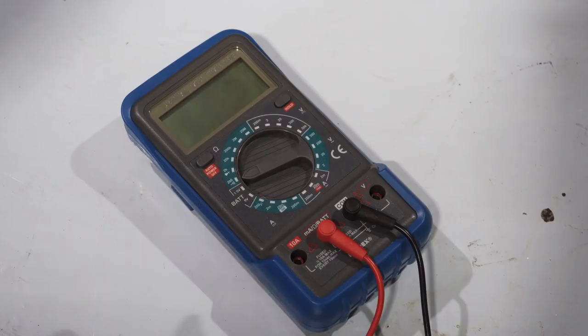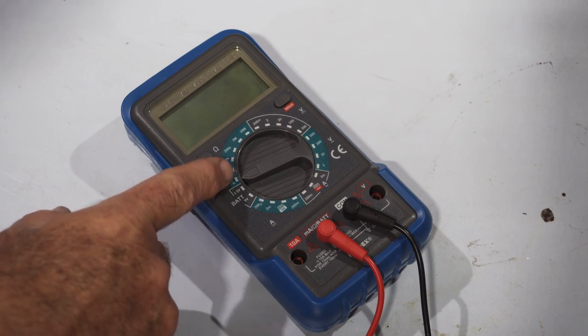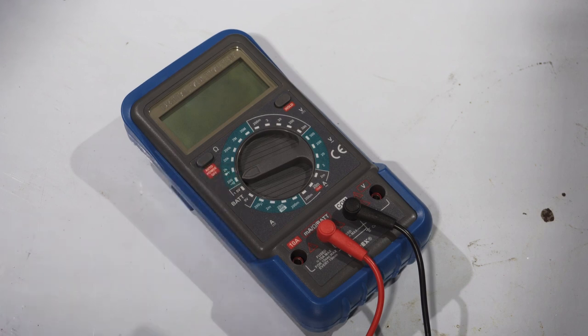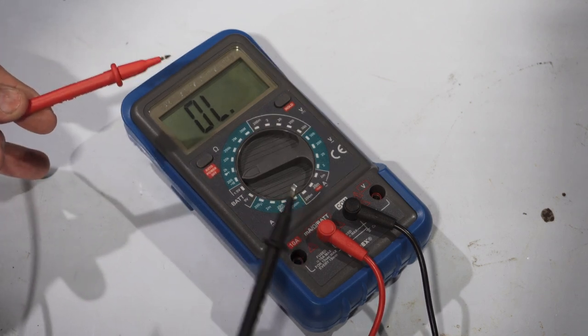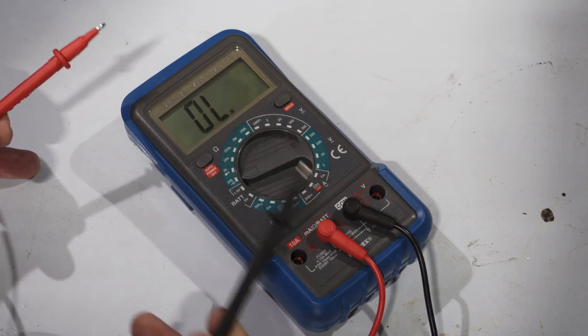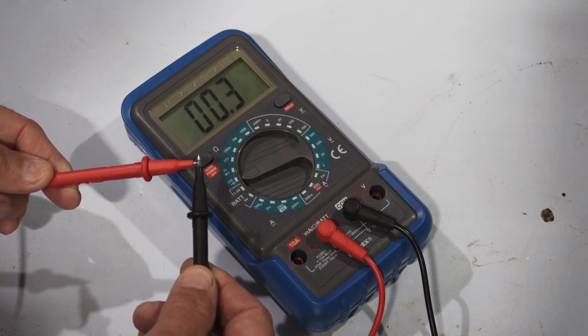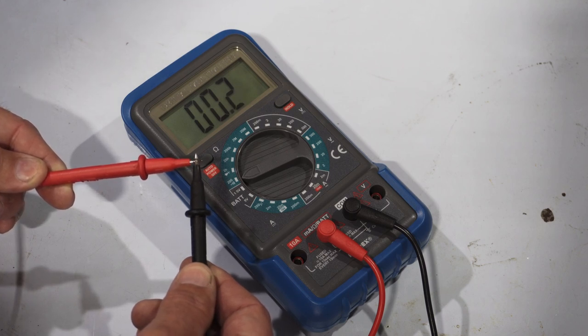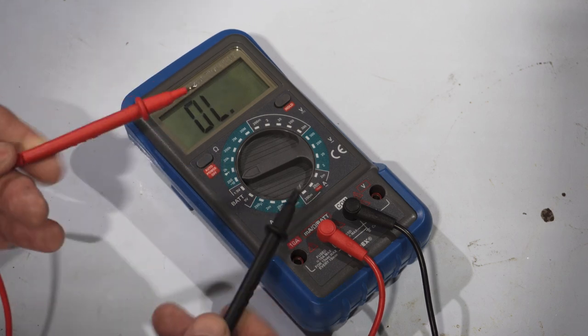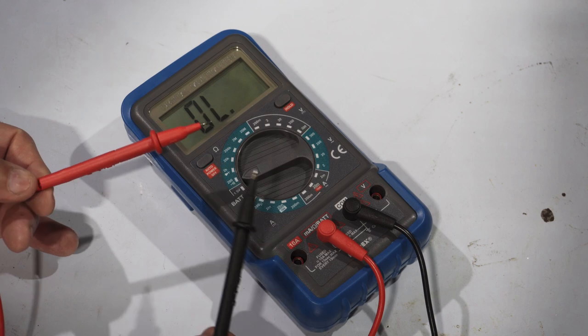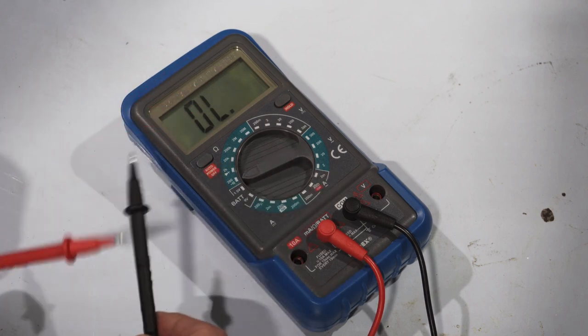The other feature that I tend to use on multimeters quite often is this setting for continuity. And what this does is allows you to check whether there's a break in a wire somewhere. So you might be wanting to check a wiring loom or something to see whether there's actually a break somewhere between the two ends of it. And to do that, really, it's just a case of getting your two probes. And you can see here, OL stands for open load, which means it's not detecting anything. And when you join the two probes together, you hear a sound and you can see that the level is about zero. And this is a great feature for checking, you know, if you have any breaks in wires. And I tend to use this quite a lot on a multimeter.